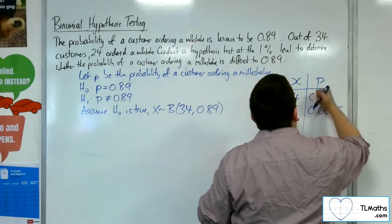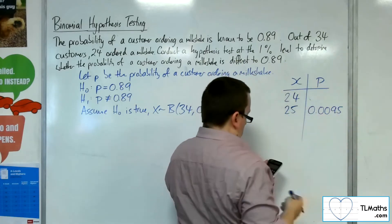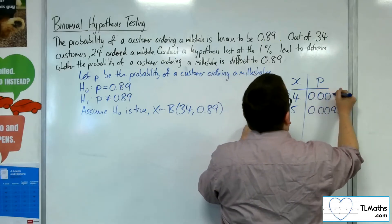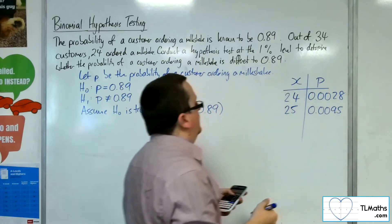I'm going to need 24. So 24, I've got 2.8 times 10 to the minus 3, so 0.0028.